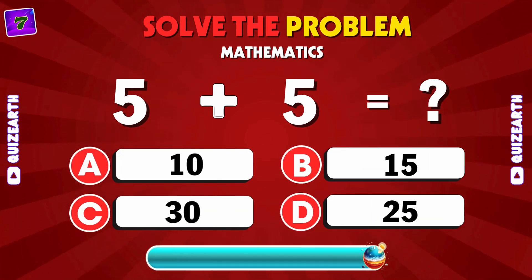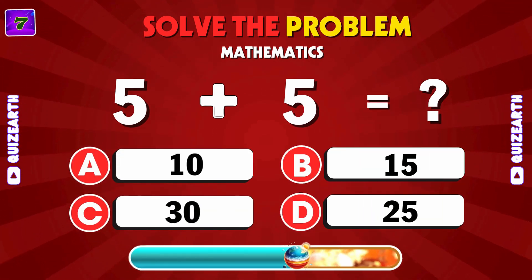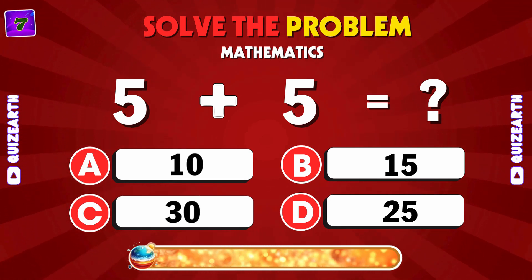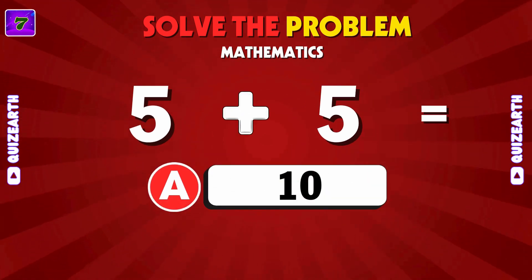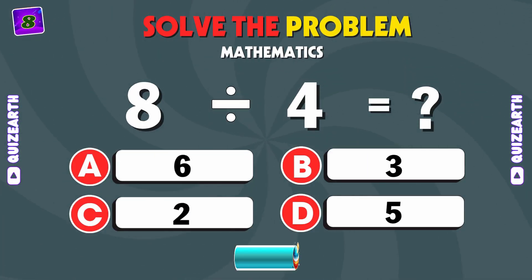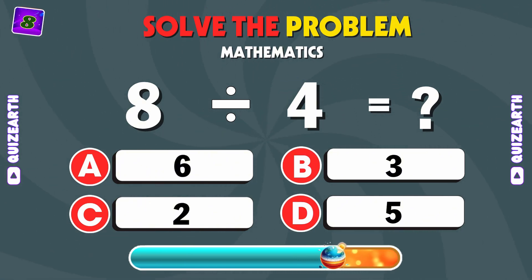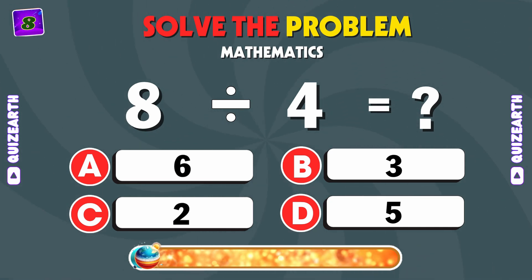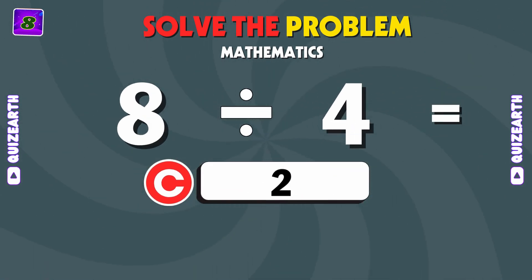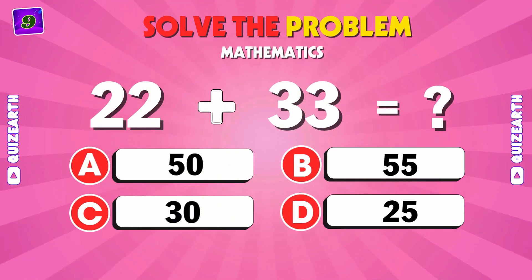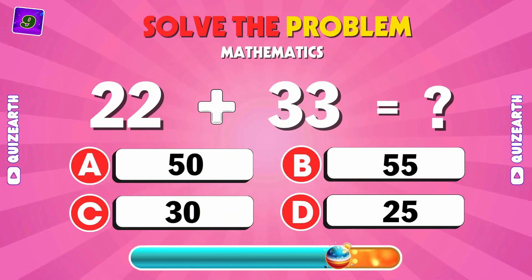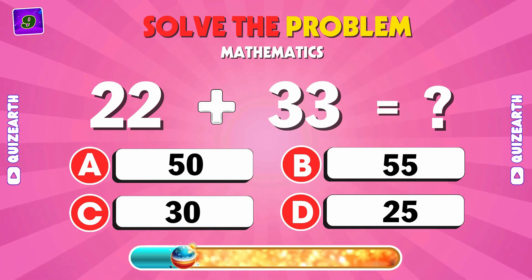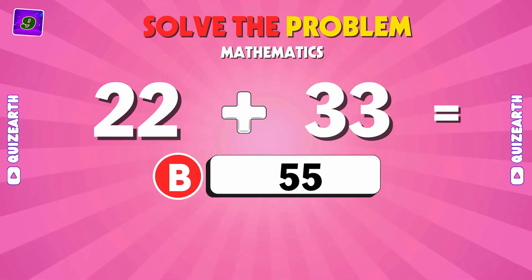Simple addition. What's 5 plus 5? A: 10. What's 8 divided by 4? C: 2. Add these up. What's 22 plus 33? B: 55.